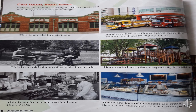Page number 30. Old town, new town. Places in town change. There are old buildings and new buildings. This is an old fire station. Modern fire stations have new fire trucks and more equipment. This is an old photo of people in the park. Now parks have places especially for children. This is an ice cream parlor from the 1950s. There are lots of different ice cream flavors in this modern ice cream parlor.